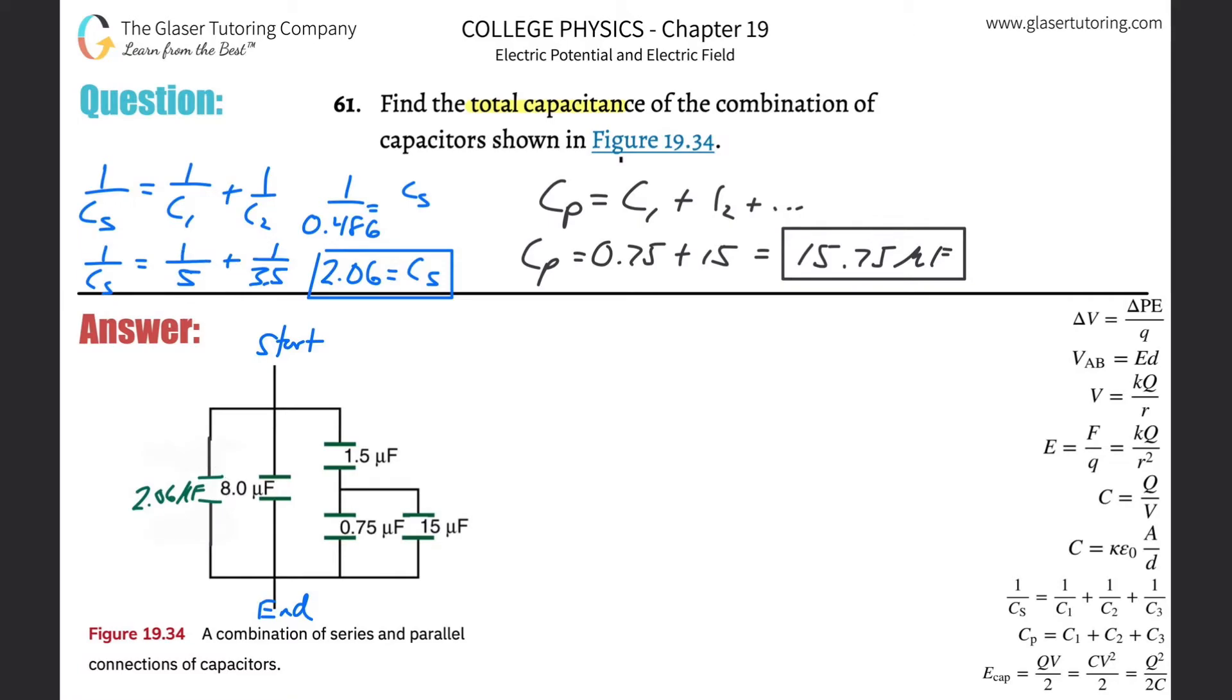Also notice that my answer before in series was less than any of the original individuals. Now I'm going to wipe that out. Let's white it out—we're going to get rid of this whole piece because I found the equivalent. I'm going to plug in here in green—it's going to have 15.75 microfarads.